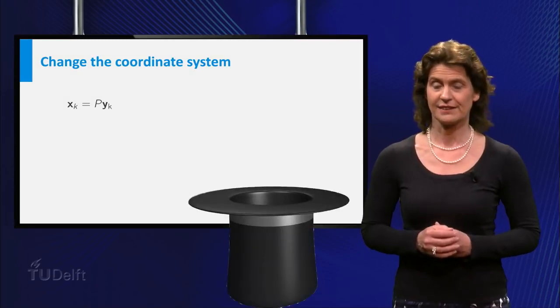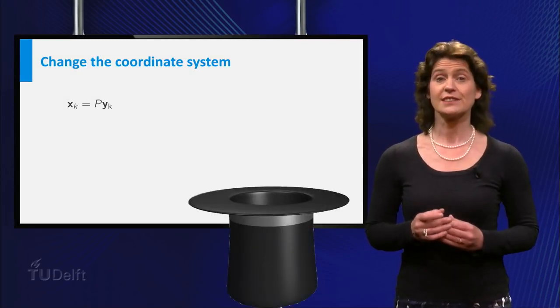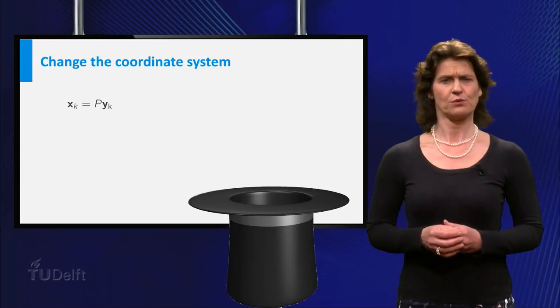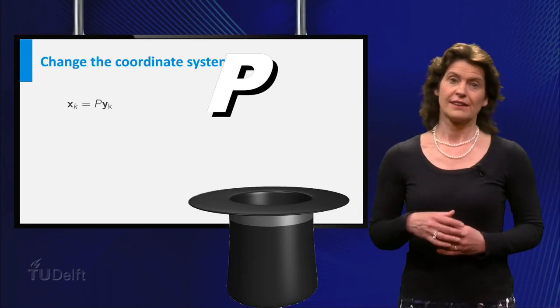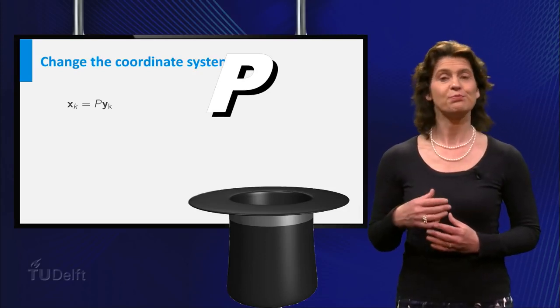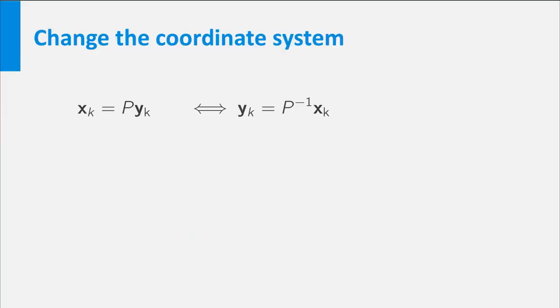Here is the magic trick. Change the coordinate systems for the axes. What does this mean? Well, pick some invertible matrix P such that xk is equal to P times yk. And so yk is P inverse times xk.